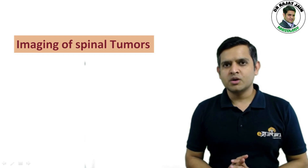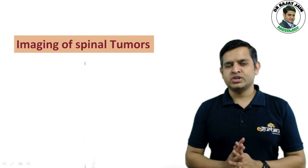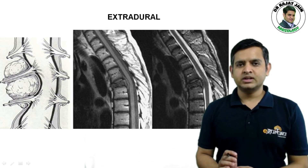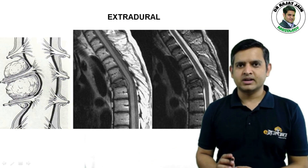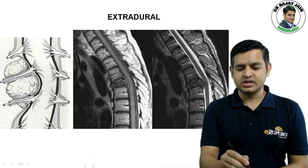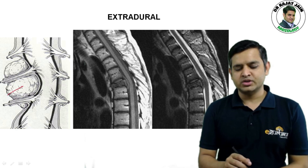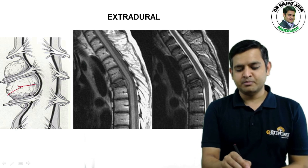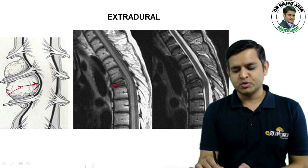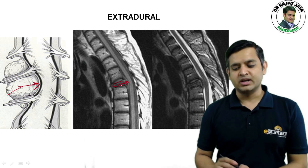In this video we will talk about imaging of various spinal tumors. This is a typical example of an extra-dural spinal tumor. As you see in a diagrammatic representation, the tumor is outside the dura and pushing the dura inside. Here you can see a vertebral mass which is pushing the dura and the spinal cord posteriorly.